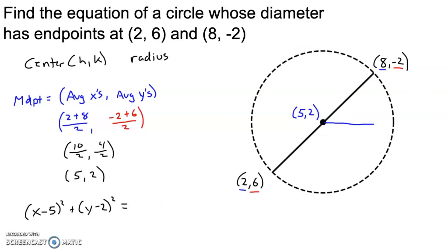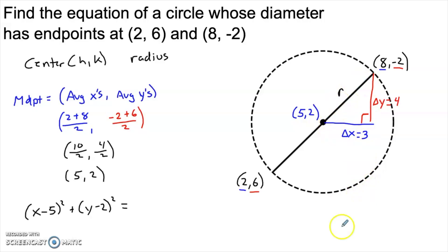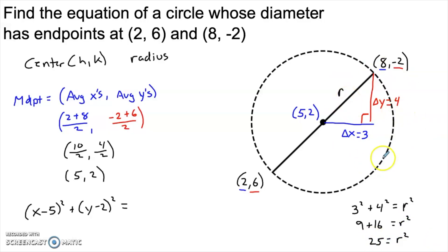To find the radius, we draw the same right triangle. The horizontal part is delta x and the vertical part is delta y. Delta x goes from 5 to 8, making it 3. Delta y goes from 2 to -2, making it 4. Pythagoras tells us 3 squared plus 4 squared equals r squared, so r squared is 25. You may recognize this as a 3-4-5 right triangle, so the radius is 5.